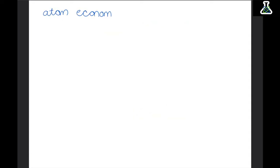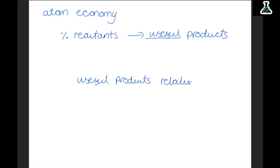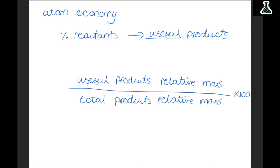Now atom economy is the percentage of the reactants that have been turned into useful products. So obviously in a chemical reaction we make things that we don't necessarily use. They are not useful. We can calculate atom economy to see how much waste we are producing. And this is found by the useful products relative mass divided by the total products relative mass. And then times the answer by 100.